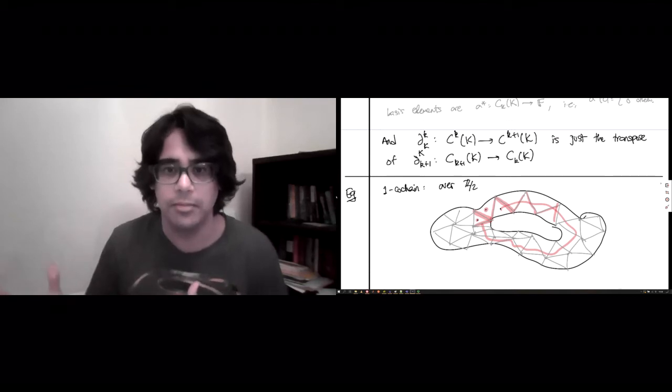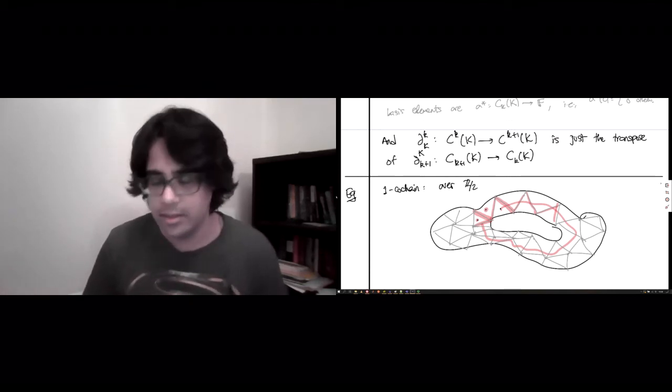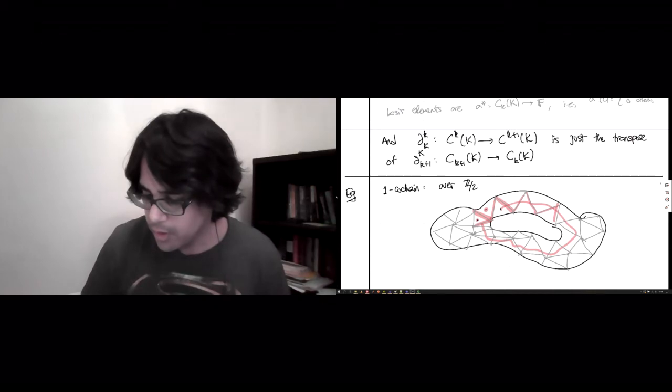So, this is actually capturing a loop, but it's capturing a loop in a very different way from a chain. For a chain, you'd want the vertices to appear twice in the boundary of the edges. Here, we want the two simplices, the higher dimensional things, to appear twice. So, that's a one co-chain.